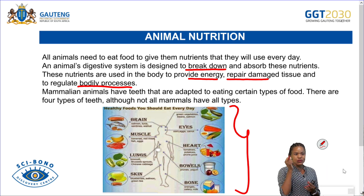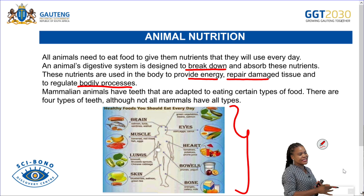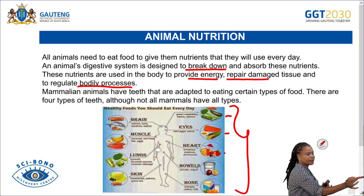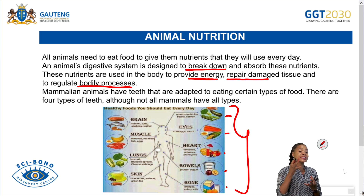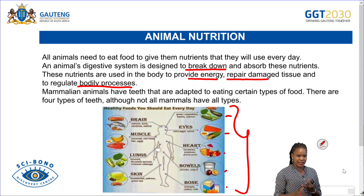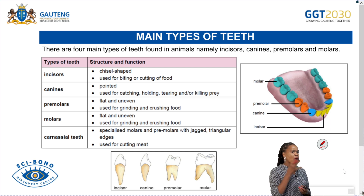Each nutrient is responsible for performing a certain function in a certain part of the body. The picture shows different foods with different nutrients, and those nutrients perform certain functions in different parts of the body. Now let's get into the business of the day.